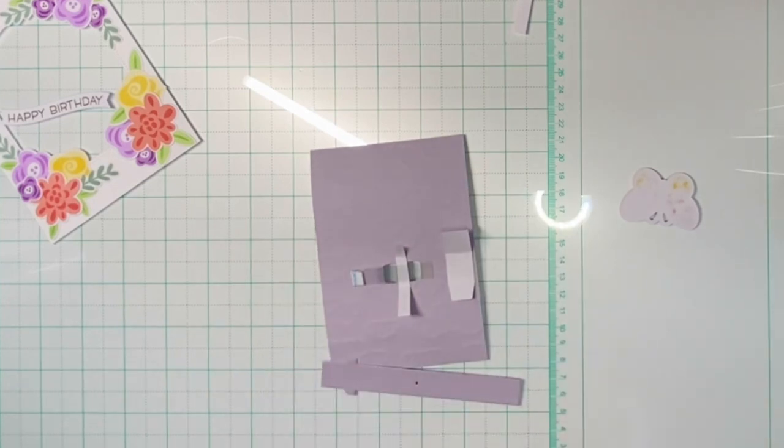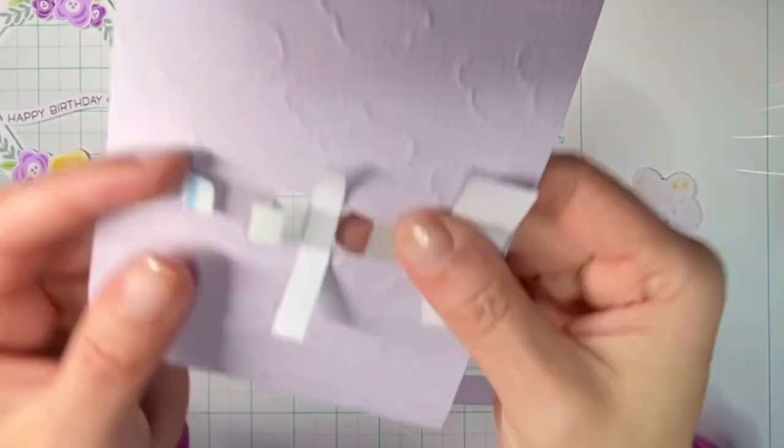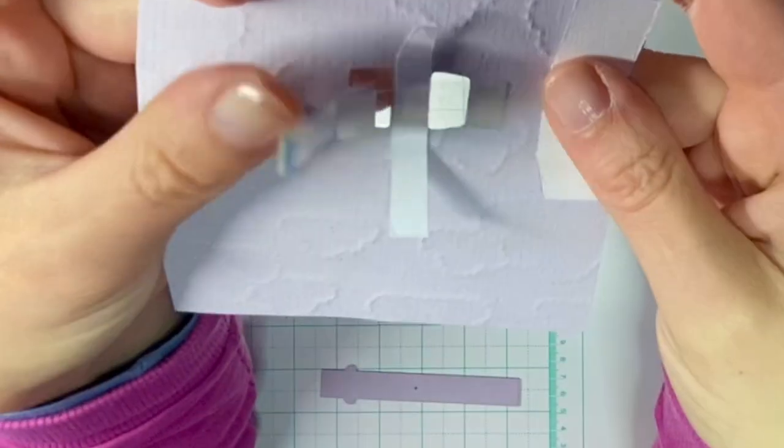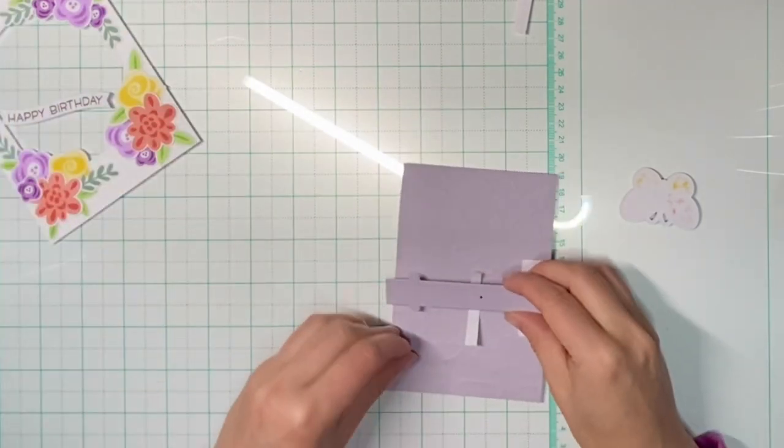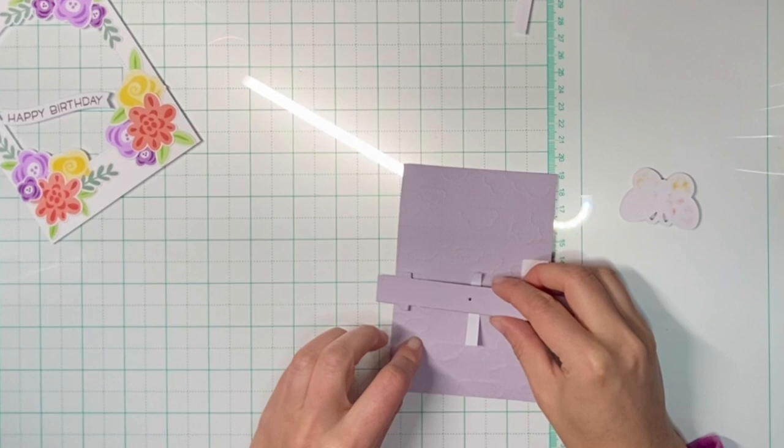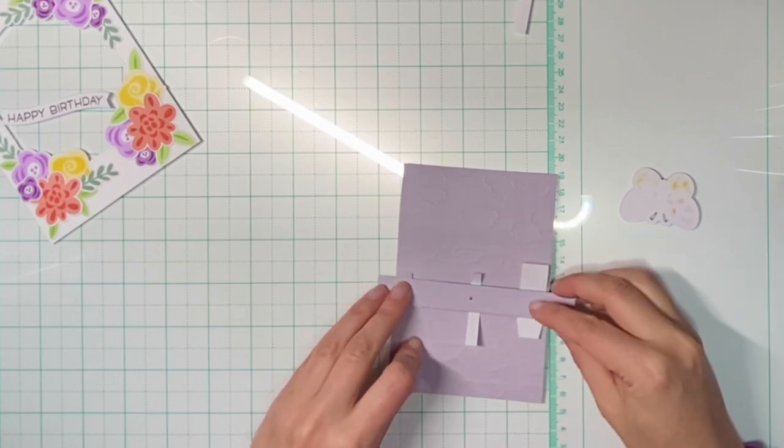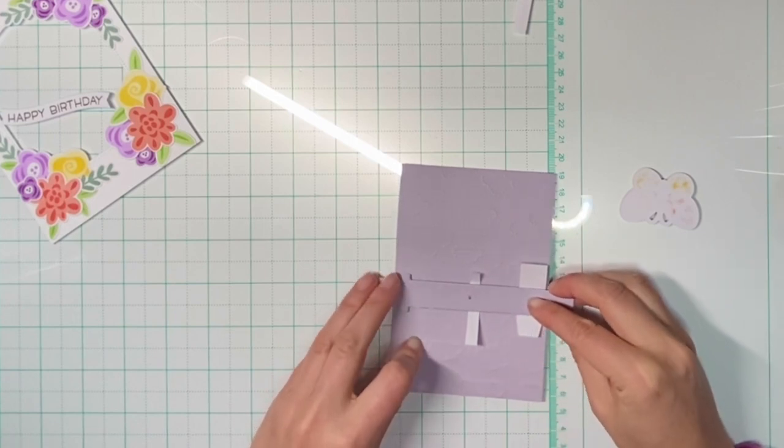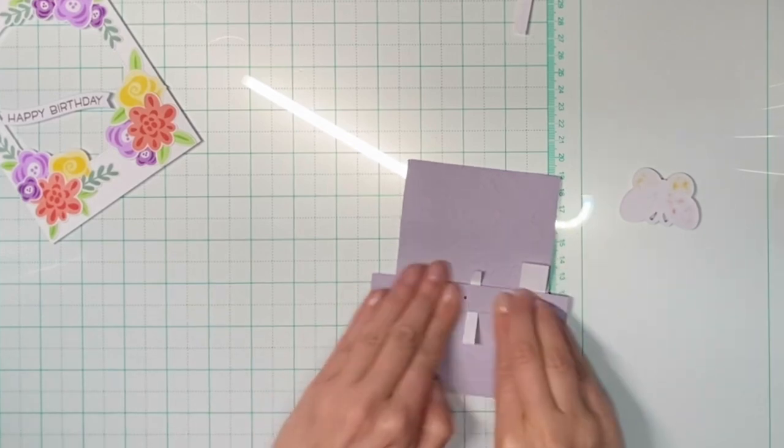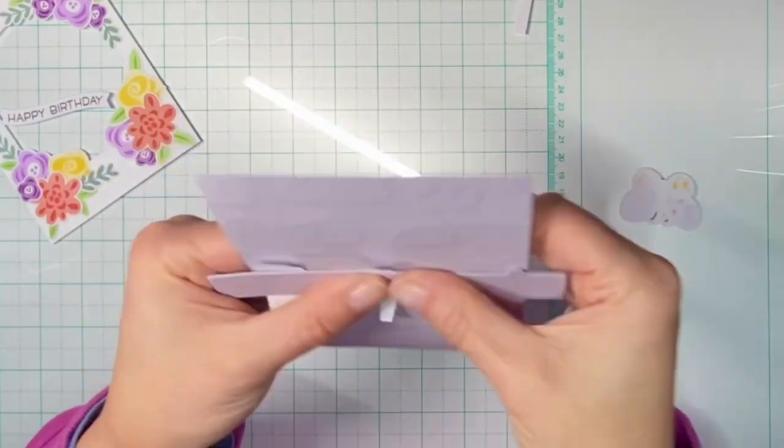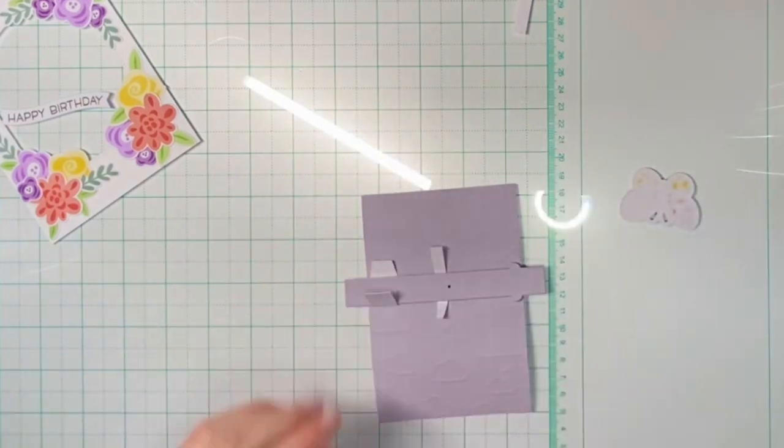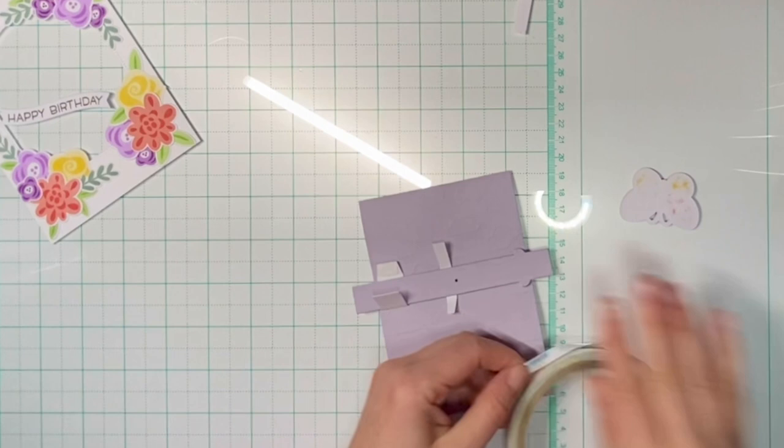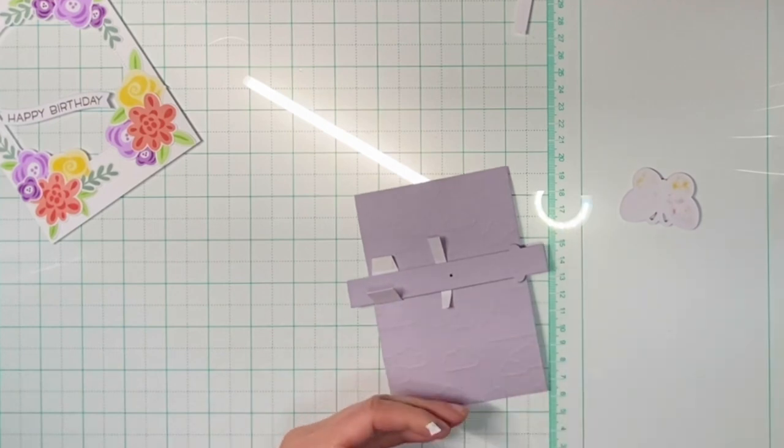Then I can adhere it to the two acetate strips. So I put some double-sided adhesive to the end of both strips and then adhere my pull tab. It's sticking out of the card, but we can shorten the end of that pull tab later.